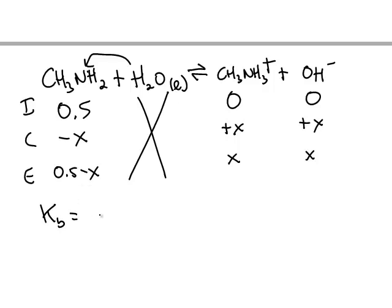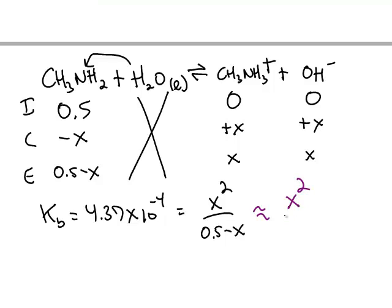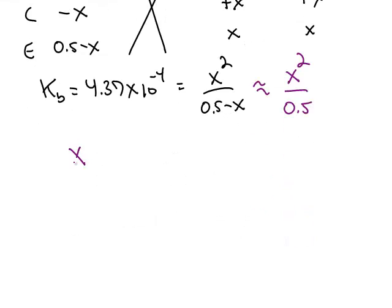KB constant we got from the PKB, 4.37 times 10 to the negative fourth. That's equal to products divided by reactants. We can try the approximation here to save time. Solve for X. X is 0.0148.